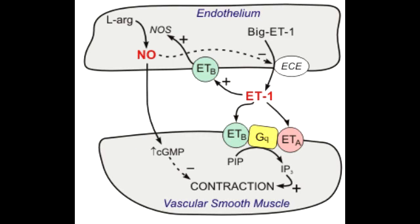The mechanism of action of Bosentan is to competitively antagonize or block endothelin A and endothelin B receptors. When you block these receptors, endothelin 1 can no longer bind to them. The normal function of endothelin 1 is to cause arterial vasoconstriction, so blocking this action results in vasodilation and a decrease in pulmonary vascular resistance.